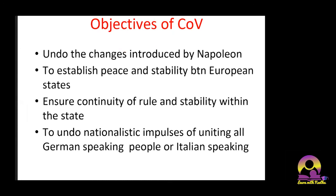The objectives of the Congress of Vienna: first, to undo the changes introduced by Napoleon and restore Europe to pre-1789. Second, to establish peace and stability between European states — to ensure continuity of rule and overcome the instability caused by the overthrow of monarchies. They intended to bring back monarchies, reversing the trend of overthrowing them. Third, to ensure continuity of rule and stability within the states. Fourth, to undo the nationalistic impulses of uniting all German-speaking or Italian-speaking people together.